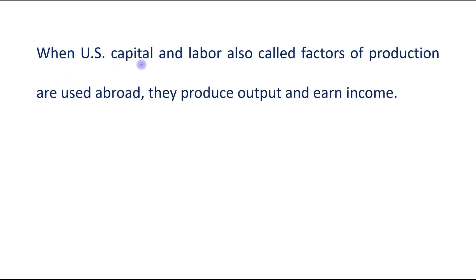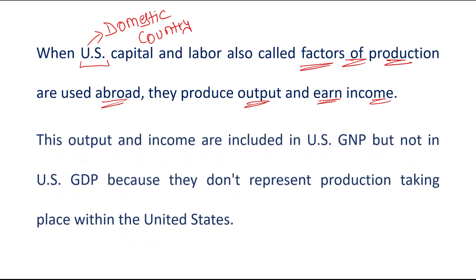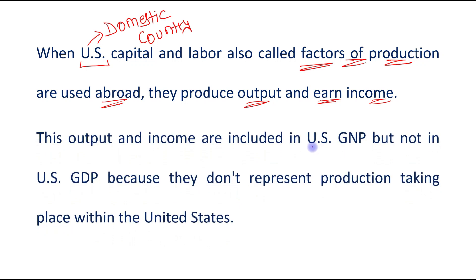When US capital and labor — also called factors of production — are used abroad, they produce output and earn income. When US factors of production are used in a foreign country, they generate output and earn income. This output and income are included in US GNP but not in US GDP.